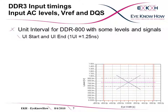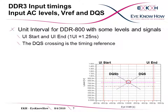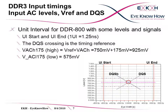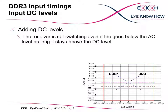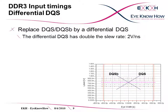The UI start and end are defined by the red vertical lines. The DQS crossing is the timing reference. Based on VREF of 750mV, the VAC high for AC 175 calculates to 925mV and similarly the VAC low to 575mV. Now we are going to add the DC levels. When the receiver has switched after a signal transition, the signal can fall below the AC levels as long as it stays above the DC levels. For simplicity, we exchanged the DQS and DQS complement signals by the differential DQS, which has a slew rate of 2V per ns. The signal in the diagram is shifted up by 750mV to have a timing reference at the VREF crossing.